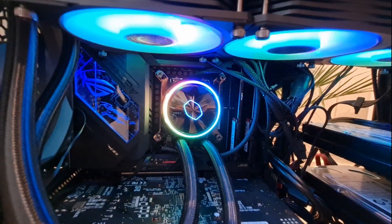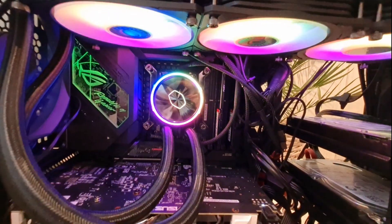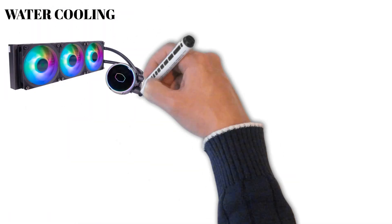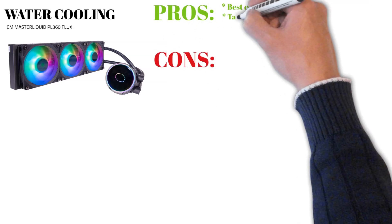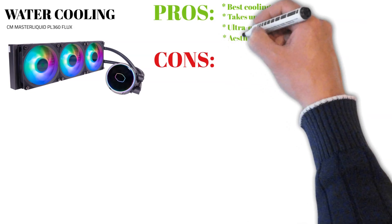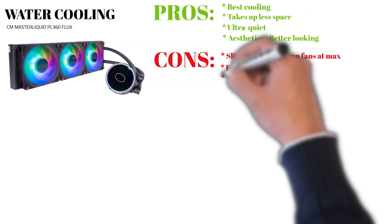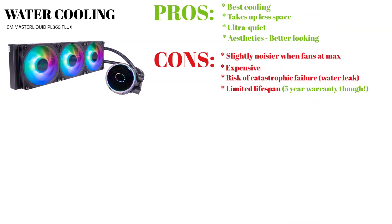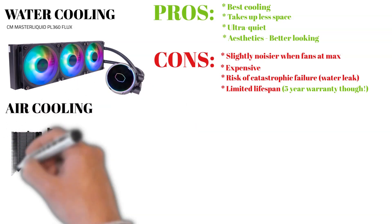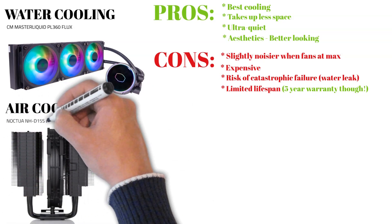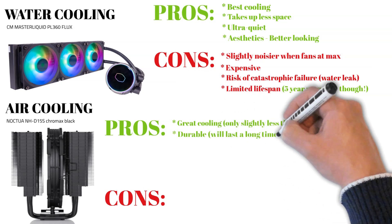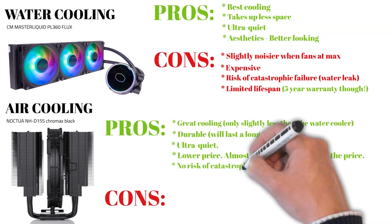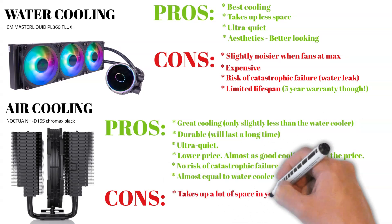During the stress test with fans at maximum, the water cooler turned out to be slightly noisier but also provided better cooling. Both coolers provided really good cooling and the difference wasn't that great. The PL360 Flux is aesthetically more pleasing, takes up less space, and provides slightly better cooling. The Noctua NH-D15S isn't far behind and is also half the price. An air cooler like this will basically last forever and you don't run the risk of catastrophic failure — though failures are extremely rare. The PL360 Flux comes with a 5-year warranty.